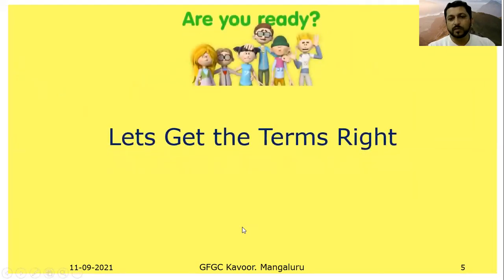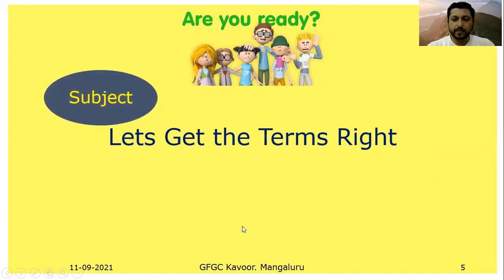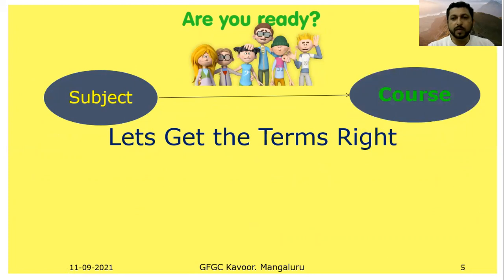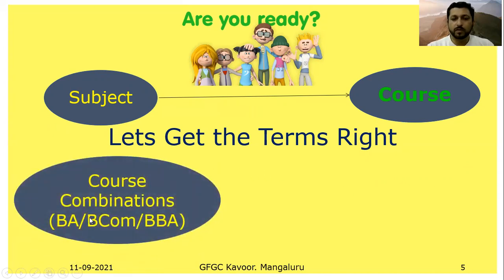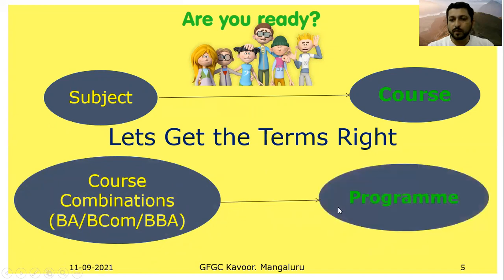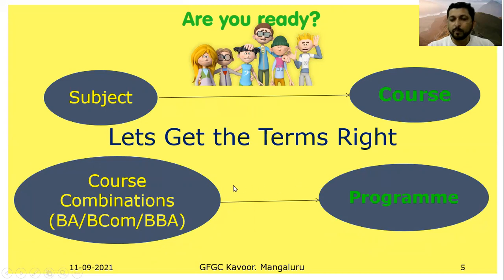Prior to NEP we used the word 'subjects,' but in NEP it is referred to as a 'course' — a course in history, a course in political science, a course in botany, etc. Earlier we had fixed combinations; now we call it a 'program' — a BA program, BCom program, BBA program, BSc program. So 'subject' is referred to as a 'course' and 'combination' is referred to as a 'program.'